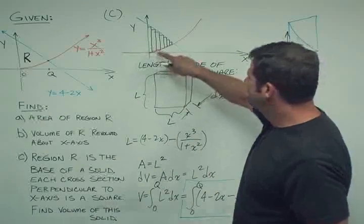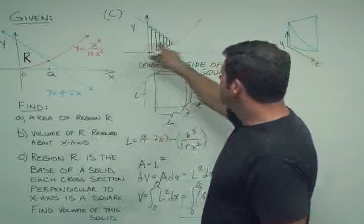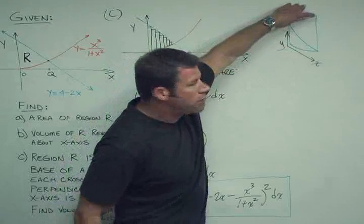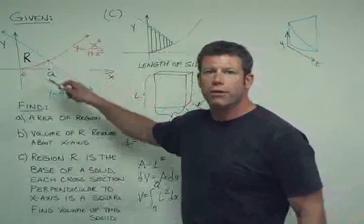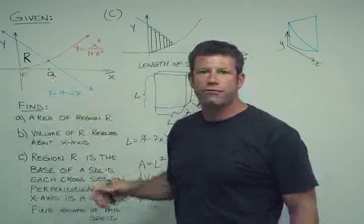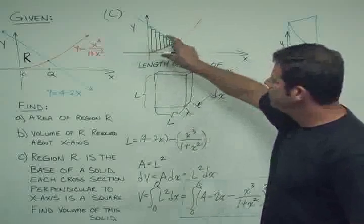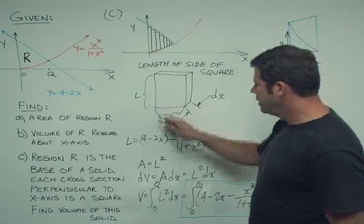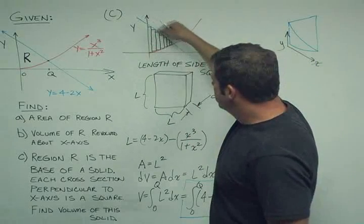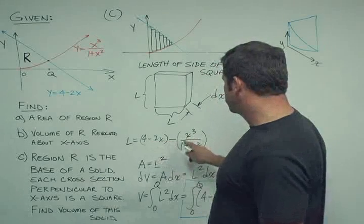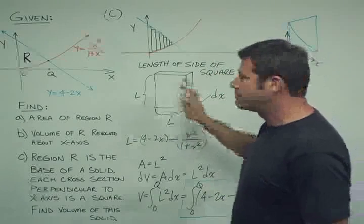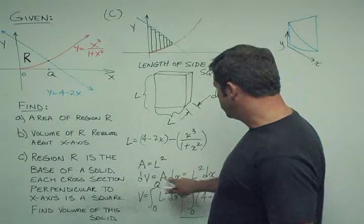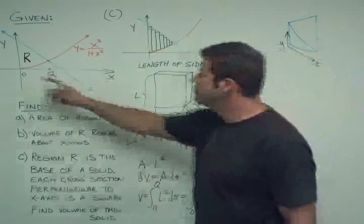I've drawn this again and inscribed a bunch of little squares, at least the bases of the squares inside this curve. It sort of has a square cross section but then comes to a point because these functions ultimately intersect. We renamed the point Q. I've taken one of these square cross sections and displayed it in a plan view. Each side has a length L with width dx. The length L is the distance between the functions, 4 minus 2x minus x cubed over 1 plus x squared. The area of a square is L squared.